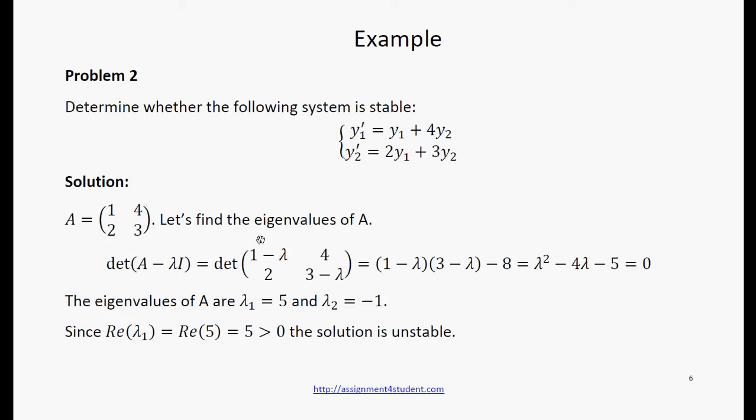The characteristic polynomial is determinant of such matrix. It equals to this polynomial. Solving this equation, we get the eigenvalues of A, 5 and minus 1. Since 5 is greater than 0, the solution is unstable according to the third statement of the theorem.